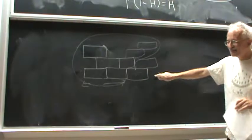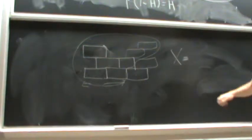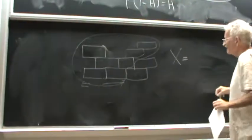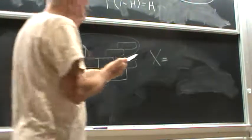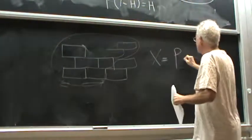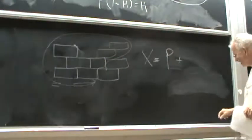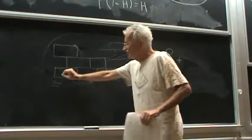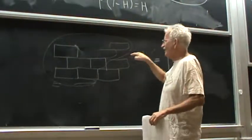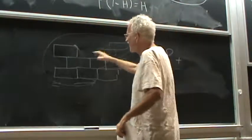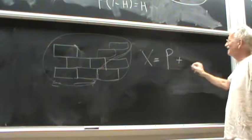Everything left over is the half pyramid. So once again, we have the following equation in generating functionology: Xavier is either a pyramid, or if it has at least two pieces at the bottom, you take everything besides the rightmost piece and everything above it, getting a smaller Xavier. The leftover is the half pyramid. So we have the beautiful equation: X equals P plus X times H.